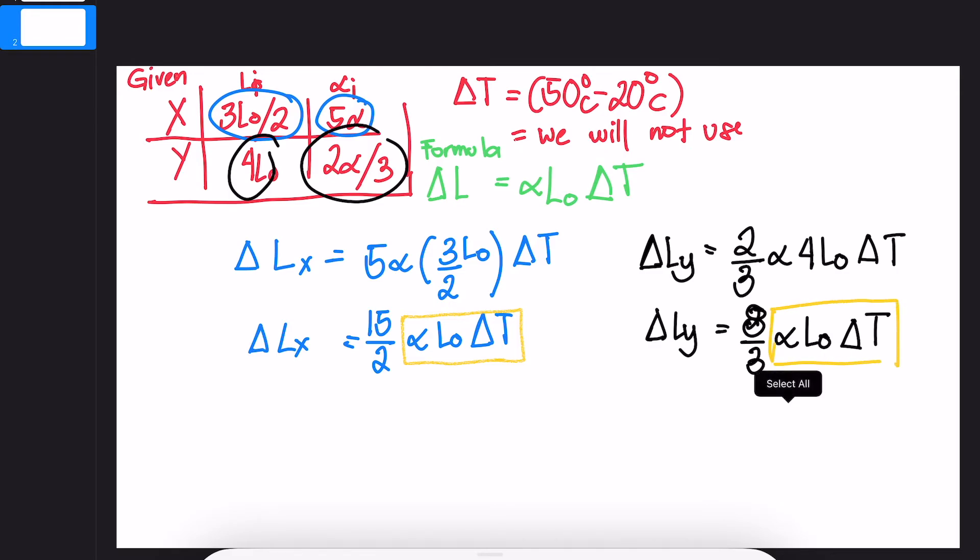We observe that they are actually the same. They are equal. Therefore, we can substitute these values to each other. Let's transfer the 8 over 3 to the other side. Since we know this value is the same with the other, we can substitute it.